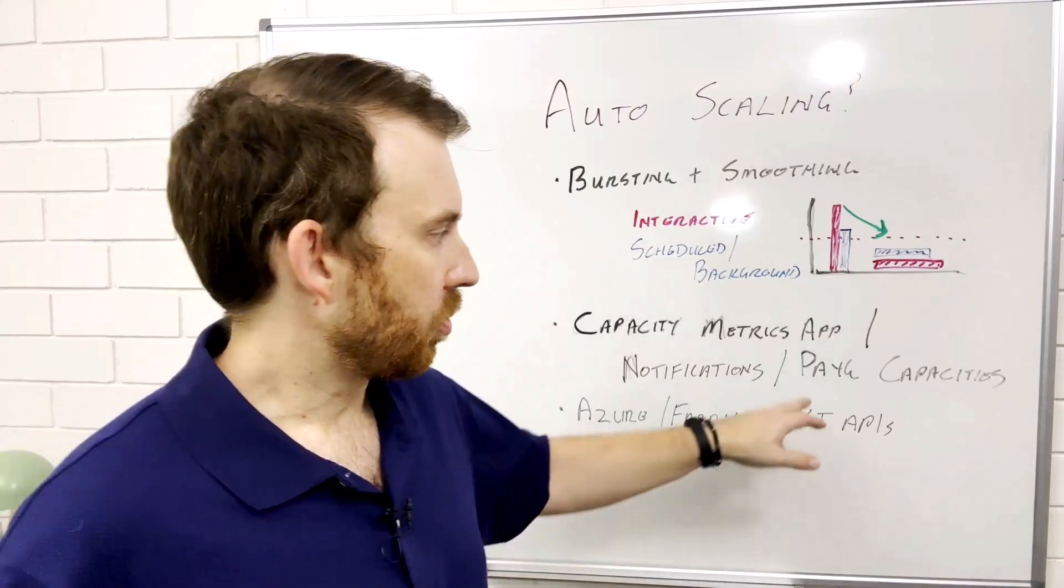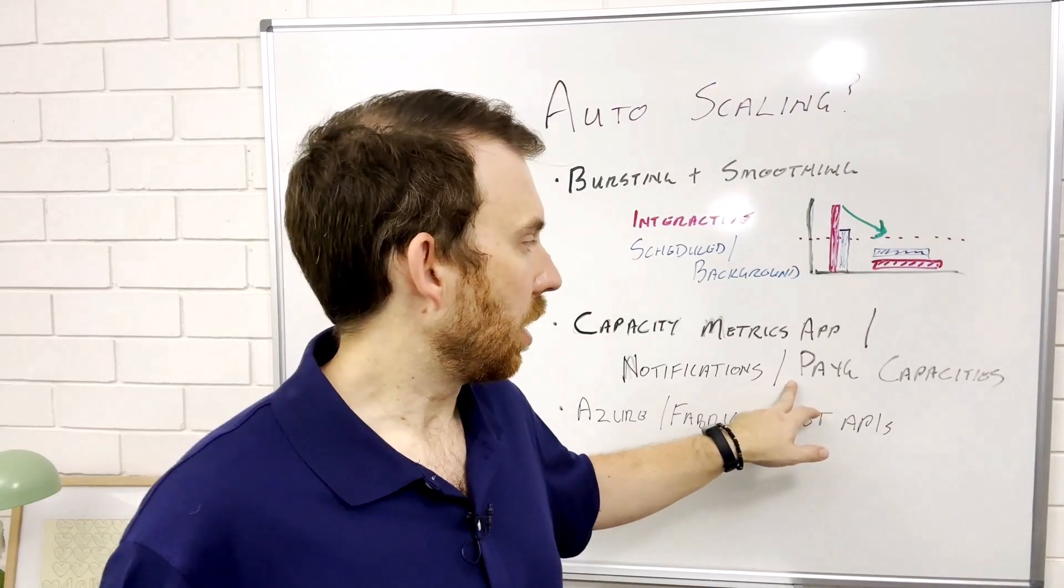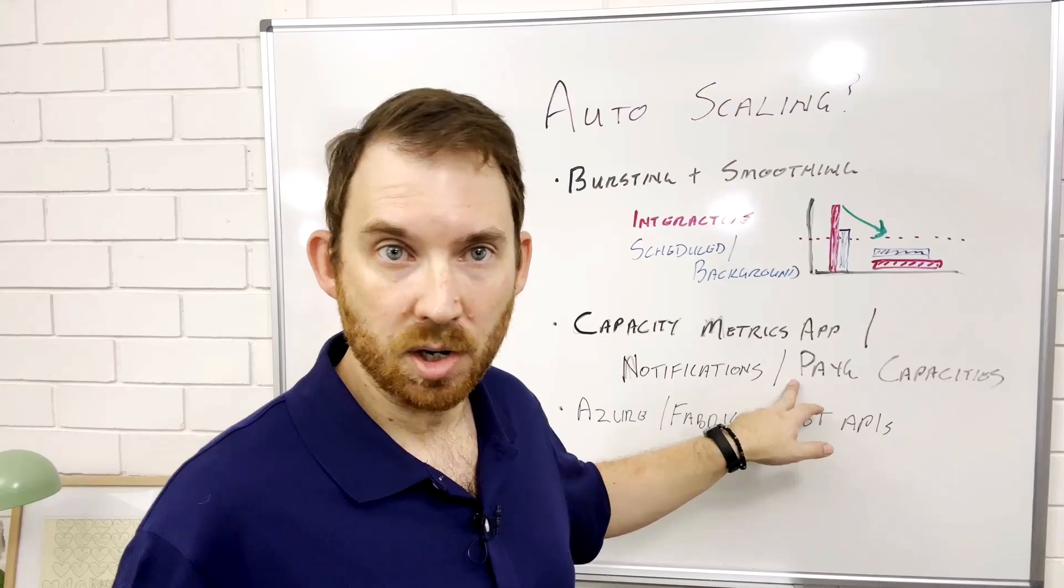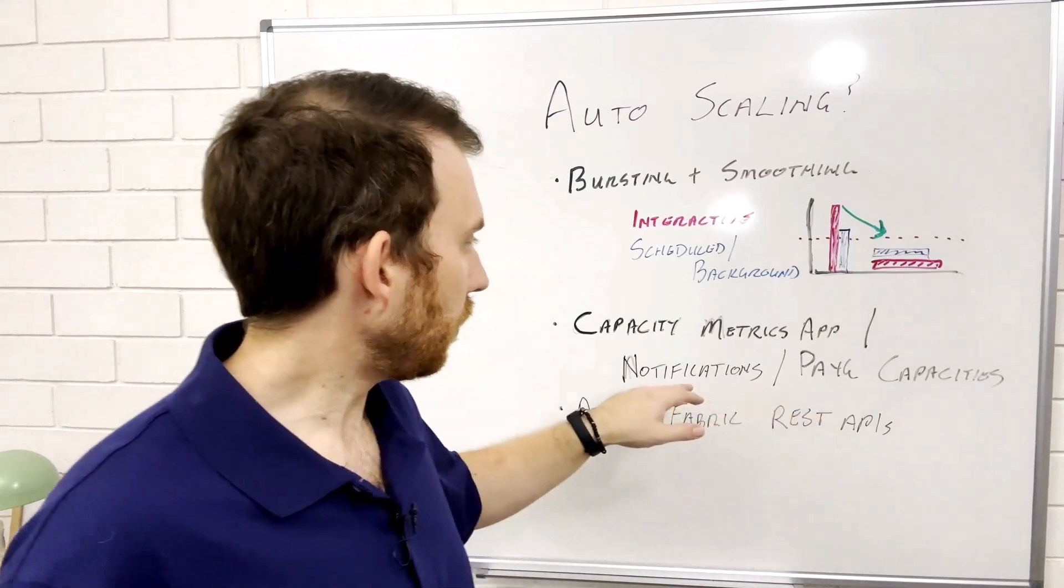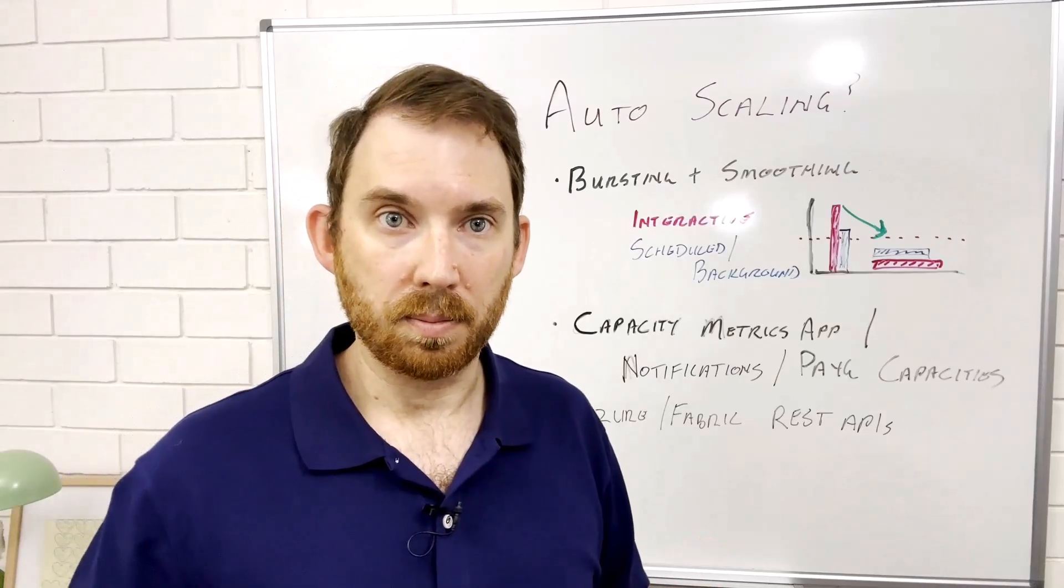The other thing you could do if you know what type of workloads they are is run some pay-as-you-go capacities, maybe separate some workloads or workspaces to use different amounts, test that out, measure what's going on and allow you to make informed decisions.